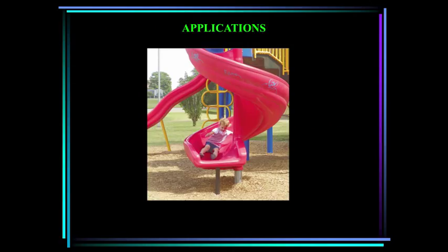The cylindrical coordinate system can be used to describe the motion of the girl on this slide. Here the radial coordinate is constant and the transverse coordinate increases with time as the girl rotates about the vertical axis, and her altitude Z decreases with time. How can you find her acceleration components?